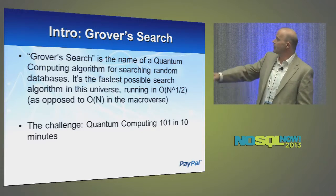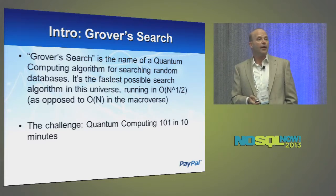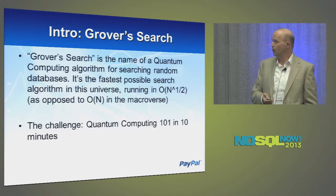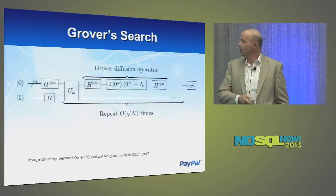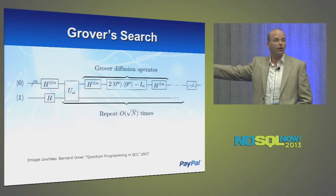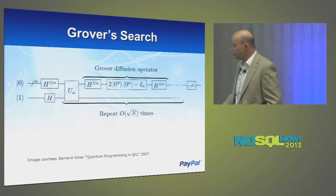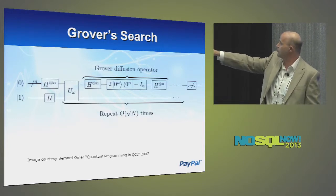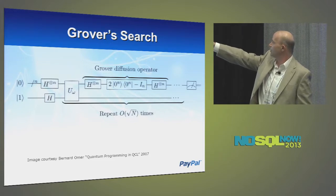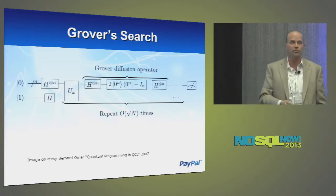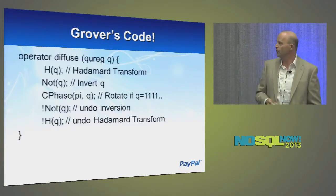Grover's search is actually provably optimal for searching a random database, which is kind of remarkable. Just to give you an idea of the complexity difference, we can run Grover in N to the one-half time, whereas normally we run it in O(N) or worse. This is what Grover's search algorithm looks like — the fastest possible search algorithm in this universe. We're applying some operators to some inputs, those are qubits. They come in, go through a Hadamard transform, then we do some work on them, invert all the things we did, and take a measurement. That little object at the end is a measurement gate, and the result is probabilistic.